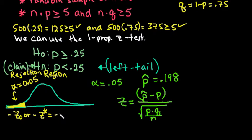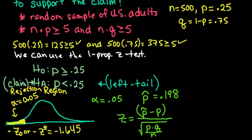I'm going to put down that this is negative 1.645. So when I plug into my calculator my values, if it falls to the left of negative 1.645, we'll reject. If not, we fail to reject.